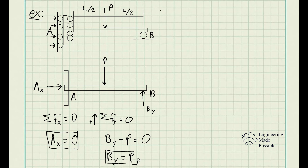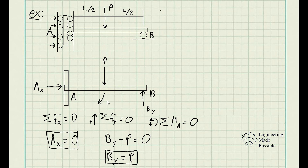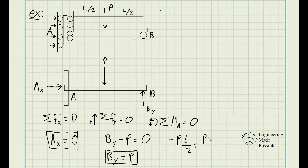From the Y equilibrium, the reactionary force B_Y equals P. Now taking the sum of moments about point A, with counterclockwise as positive: the force P causes a clockwise moment, so that's negative — P times its perpendicular distance L/2. The force B_Y causes a counterclockwise moment, positive — B_Y times its perpendicular distance L. Looking at these two moment terms alone with respect to point A, they will not cancel out and won't equal zero.